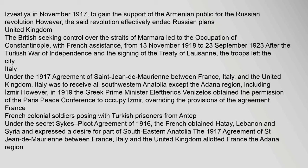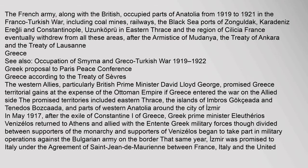However, in 1919 the Greek Prime Minister Eleftherios Venizelos obtained the permission of the Paris Peace Conference to occupy Izmir, overriding the provisions of the agreement. France: Under the secret Sykes-Picot Agreement of 1916, the French obtained Hattay, Lebanon, and Syria, and expressed a desire for part of southeastern Anatolia. The 1917 Agreement of St. Jean-de-Maurien allotted France the Adana region. The French army, along with the British, occupied parts of Anatolia from 1919 to 1921 in the Franco-Turkish War, including coal mines, railways, the Black Sea ports, and the region of Cilicia. France eventually withdrew from all these areas after the armistice of Mudanya, the Treaty of Ankara, and the Treaty of Lausanne.